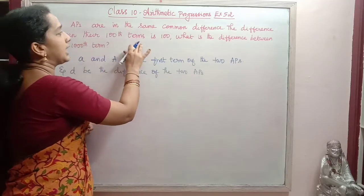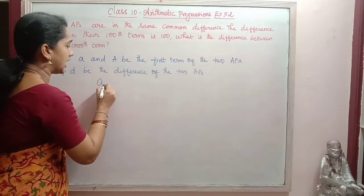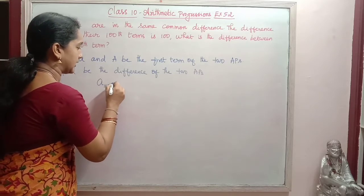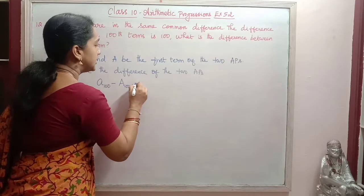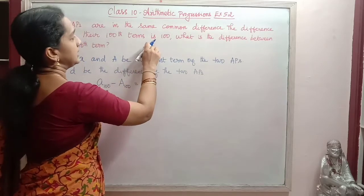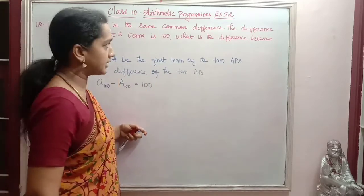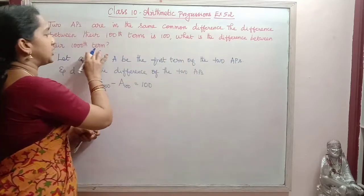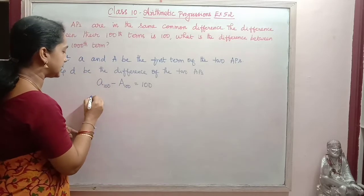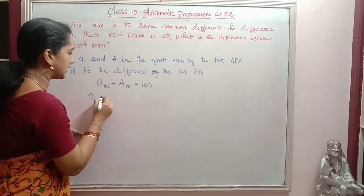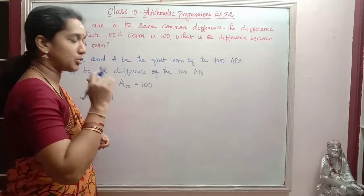The difference between their 100th terms is 100. So, a₁₀₀ minus A₁₀₀ equals 100. We know that a₁₀₀ = a + 99d, using the formula Aₙ = A + (n−1)d. Since the difference is the same, we write it as small d.